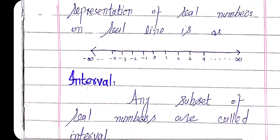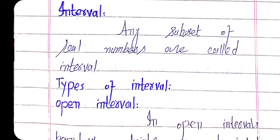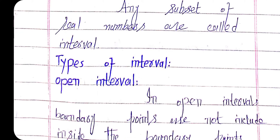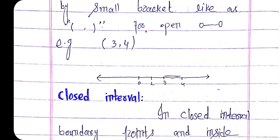Now we move towards intervals. Any subset of real numbers is called an interval. The types of intervals are: open intervals, closed intervals, and semi-open intervals. In open intervals, the boundary points are not included, and we represent open intervals using round brackets. The boundary points are not included, but all real numbers inside the boundary points are included. On the real line, open intervals are represented using open circles at both ends.